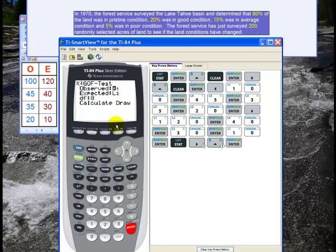The observed is L1 and the expected is L2. Remember, the degrees of freedom is the number of rows minus 1. In other words, we had 4 different categories, subtract 1 and get 3, so we have 3 degrees of freedom. I scroll down and hit CALCULATE. It tells me that the chi-squared statistic is about 14.8 and the p-value is about 0.002.